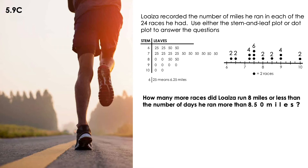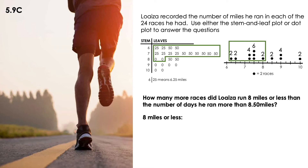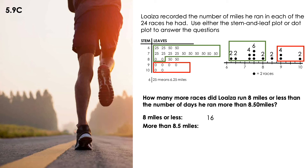How many more races did Loaiza run 8 miles or less than the number of races he ran more than 8.50 miles? The key detail is that '8 miles or less' includes 8. Counting all values from the first entry up through 8, I have 16 races. For more than 8.50 miles — which does not include 8.50 — I only have 6 races. So 16 minus 6 equals 10 more races.